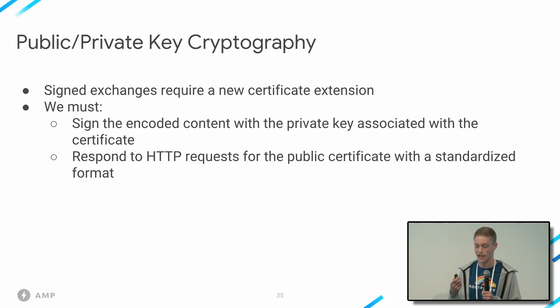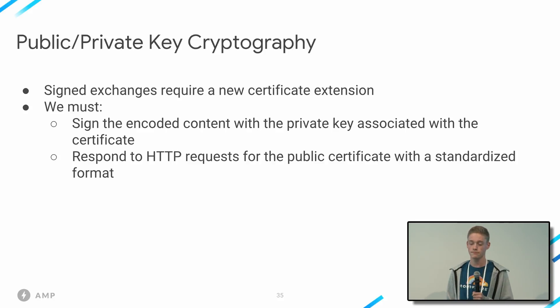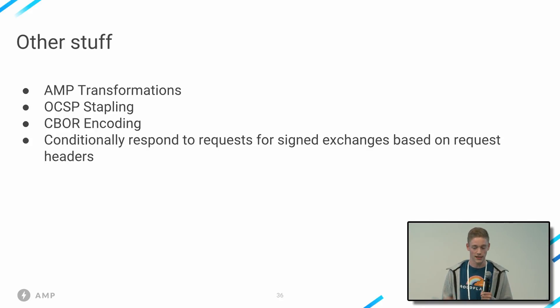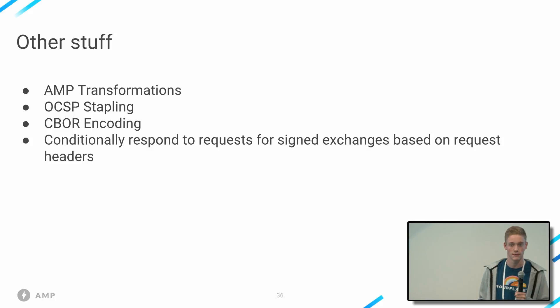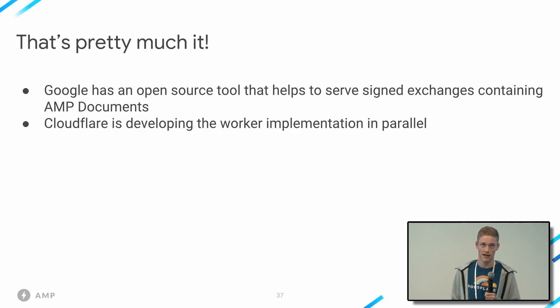Publishers also have to host the public certificate on the web for browsers to verify that the signed exchange has been signed by the publisher. The main point is that it needs to be tamper-proof, and the publisher needs to prove that they have provided this content to Google's AMP Cache. Cloudflare's implementation is being developed in parallel with Google's updates to the protocol and alongside Google's AMP Packager. We're committed to providing a fix to the AMP URL problem for publishers. We aren't ready to announce open support yet as it's still in a very experimental stage, but keep your eyes peeled for signed exchanges support in the future.